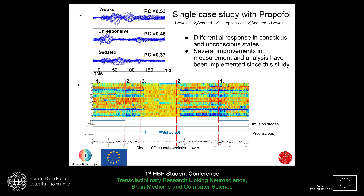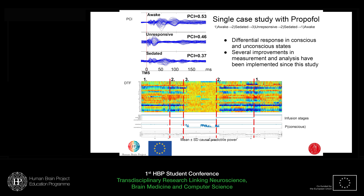We've done one single-case pilot and here is a brief summary of the results. You can see the PCI — the magnetic stimulation and the neural response picked up from the EEG afterwards — showing a qualitatively different response in the unresponsive versus the awake state. However, our analysis does not agree and suggests this person should be more conscious, so there is room for improvement on the methods side. The DTF shows the same differentiation between the unresponsive and awake states, and the classification algorithm probability shown here classifies the states as conscious or unconscious accordingly.